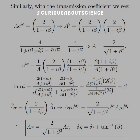For the transmission coefficient, a similar arrangement gives A equals 2 over the square root of 1 plus beta squared — not 1 as in the reflected case. Plugging in for e to the i phi and simplifying using the complex tangent definition, most terms cancel and tangent phi equals beta. The final results are: A_T equals 2 over sqrt(1 plus beta squared) times A_I, and the transmitted phase delta_T equals delta_I plus arctan(beta). This whole chapter is messy like this — get ready for the long haul.